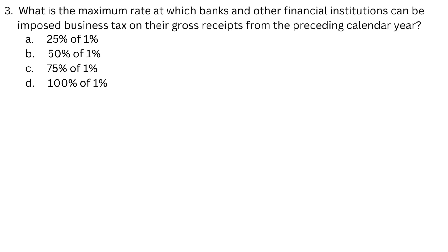Question 3: What is the maximum rate at which banks and other financial institutions can be imposed business tax on their gross receipts from the preceding calendar year? A. 25% of 1%. B. 50% of 1%. C. 75% of 1%. D. 100% of 1%.